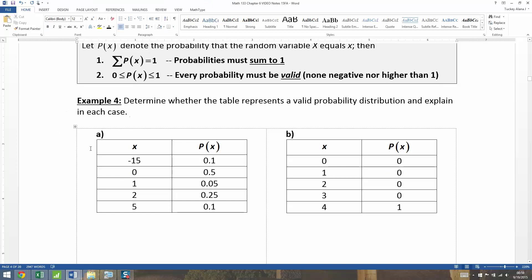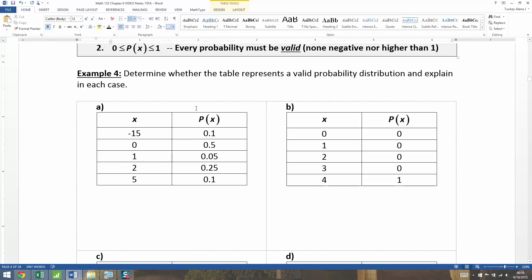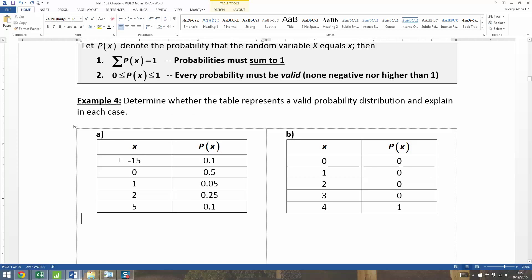So we're going to determine whether the following are valid probability distributions and explain in each case. Now you might be worried about letter A because there's this negative 15 here. However, I didn't say anything about X can't be negative. I just said the probabilities can't be negative. In this case, none of the probabilities are negative. And there are none that are bigger than 1, so that's good.